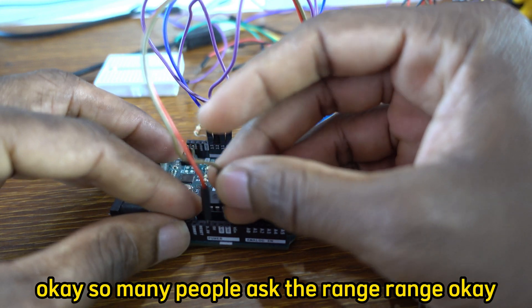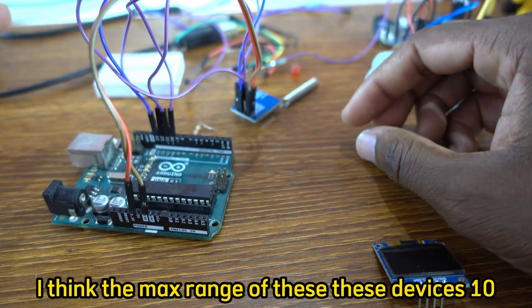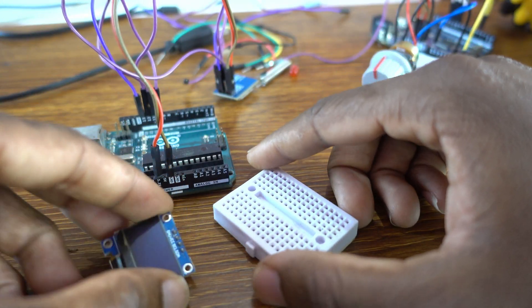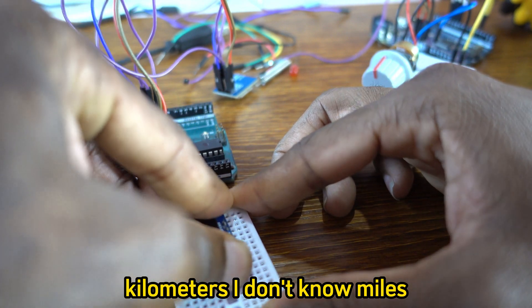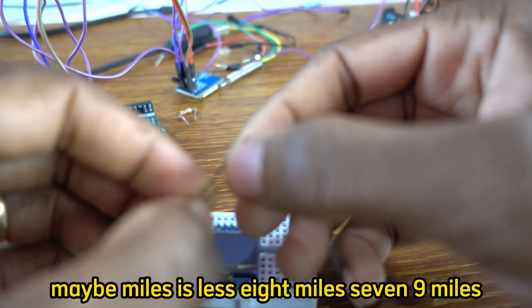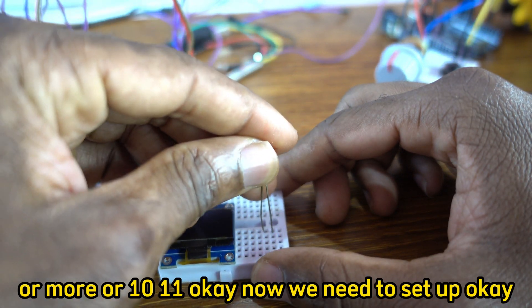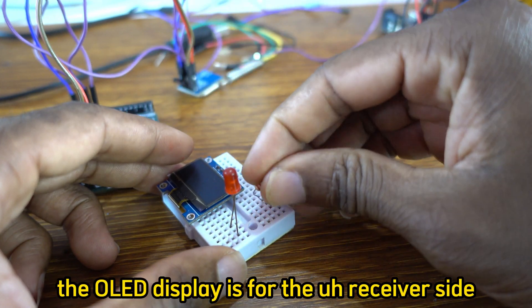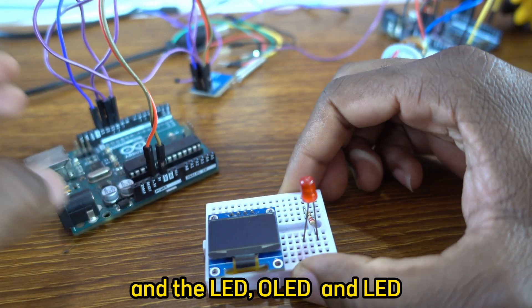So many people ask the range. I think the max range of these devices is 10 kilometers, I don't know miles - maybe miles is less, eight miles, seven, nine miles, I don't know, or more, or 10, 11. Now we need to set up the OLED display is for the receiver side and the LED.